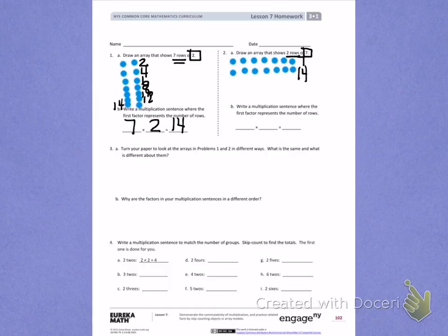Letter B. Write a multiplication sentence where the first factor represents the number of rows. Similar to number 1, this time I have 2 rows times 7 in each row, which still gives me 14, using the commutative property of multiplication to help.